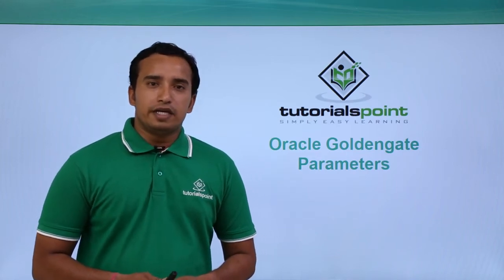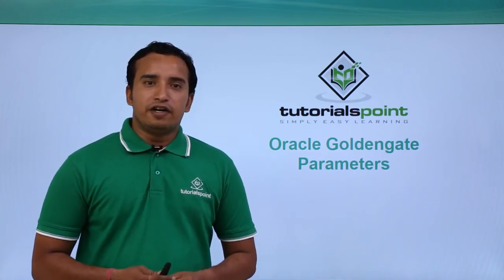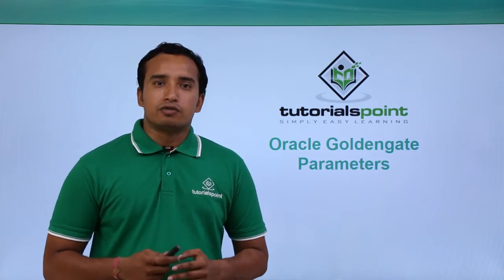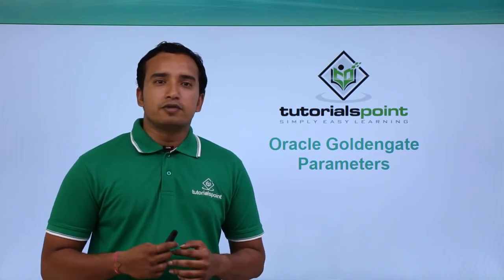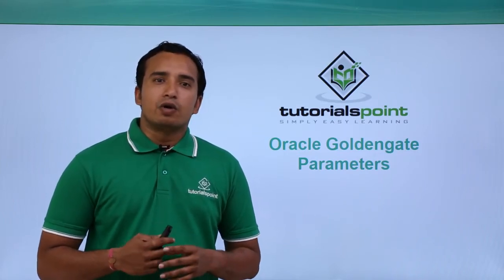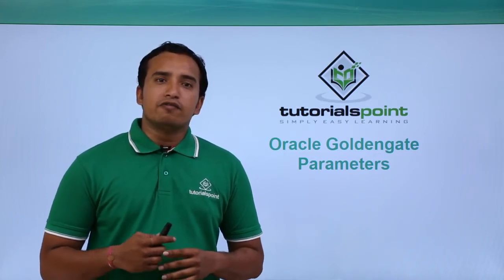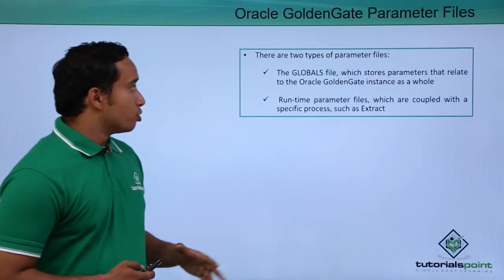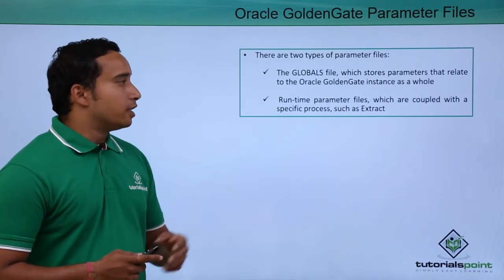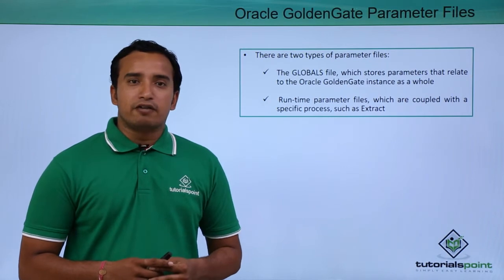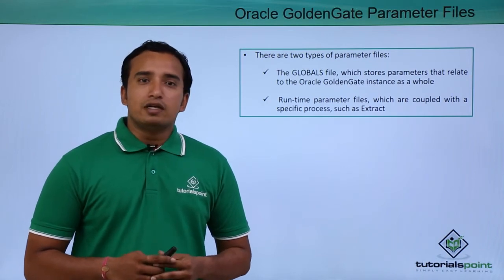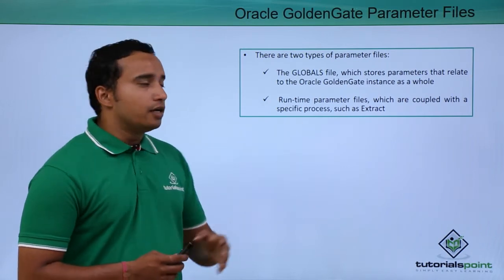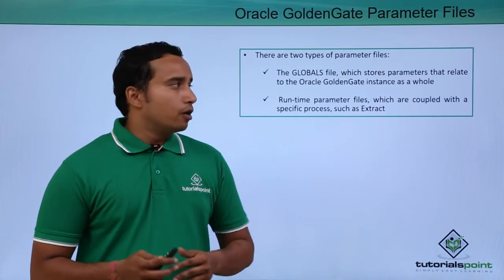In this video, we will be seeing the different GoldenGate parameters that you can use, what are the different types of GoldenGate parameters, and what are the different types of GoldenGate parameter files. Basically, there are two types of GoldenGate parameter files: one is a global parameter file and the other is a runtime parameter file.